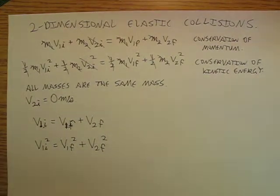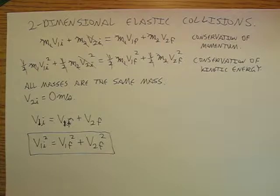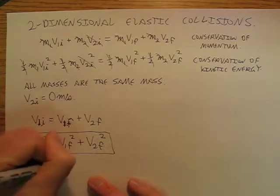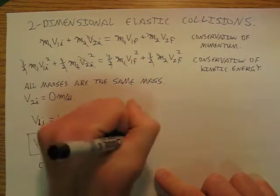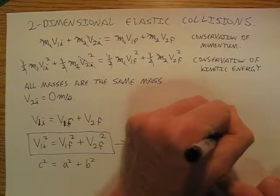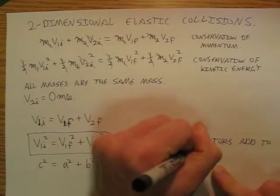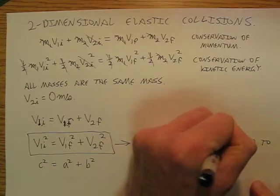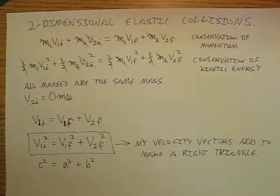Now, most people can get this if I give them a chance to think about it. Look at this equation, and that equation looks very much like an equation you know. So hit pause and think about it. That equation looks very much like c squared equals a squared plus b squared. So this means that my velocity vectors add to make a right triangle.